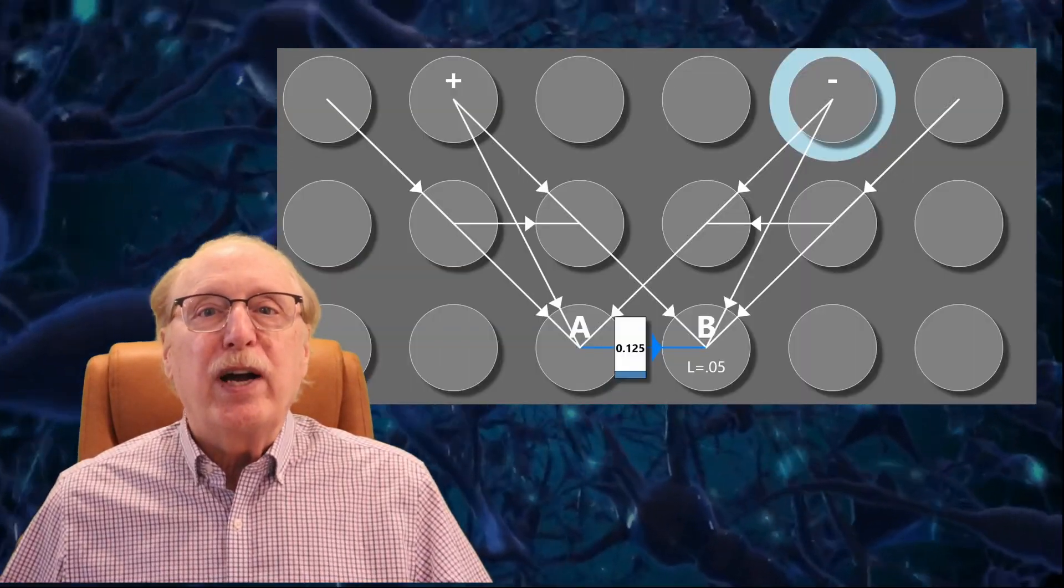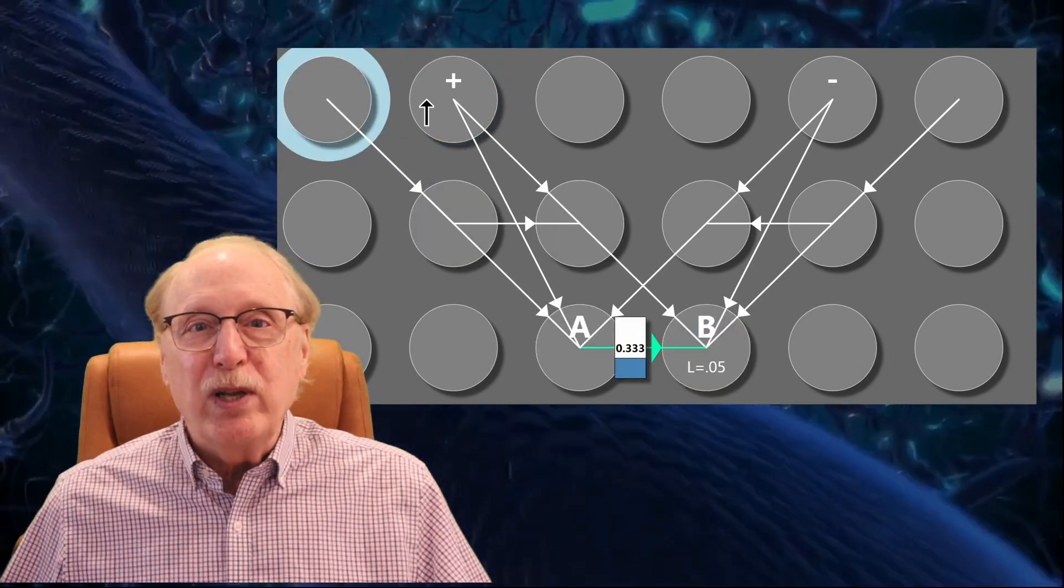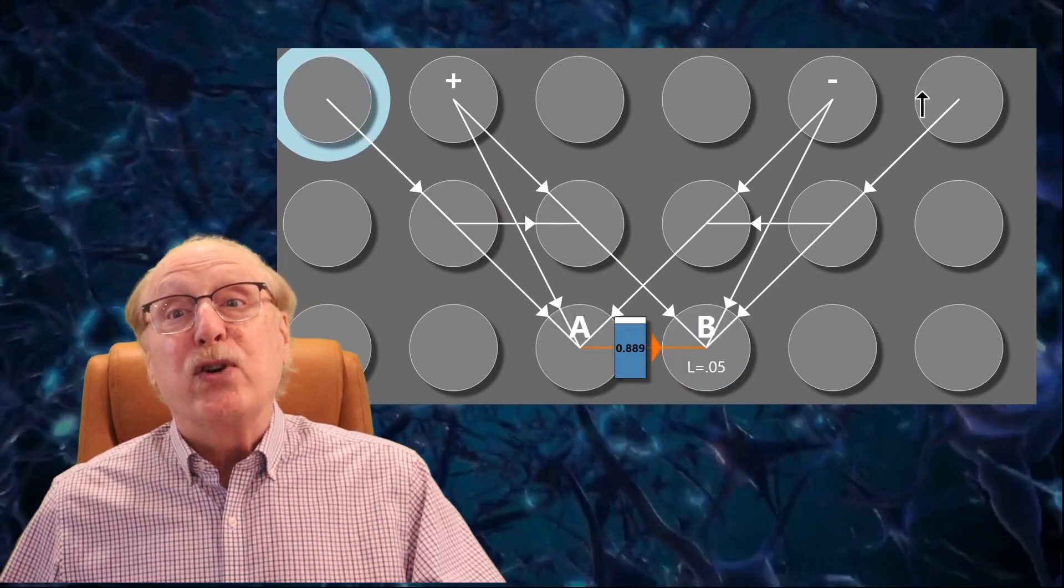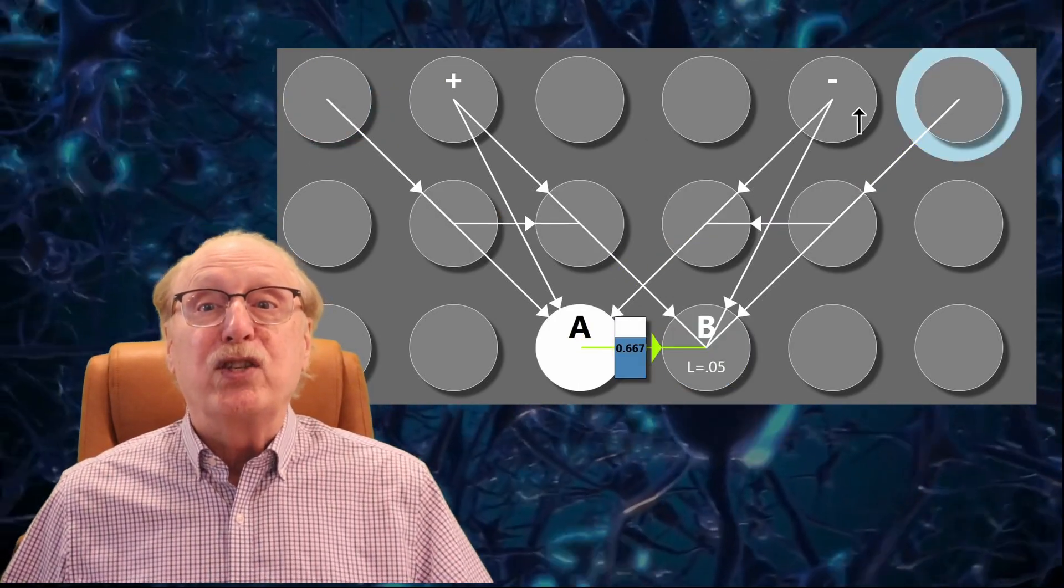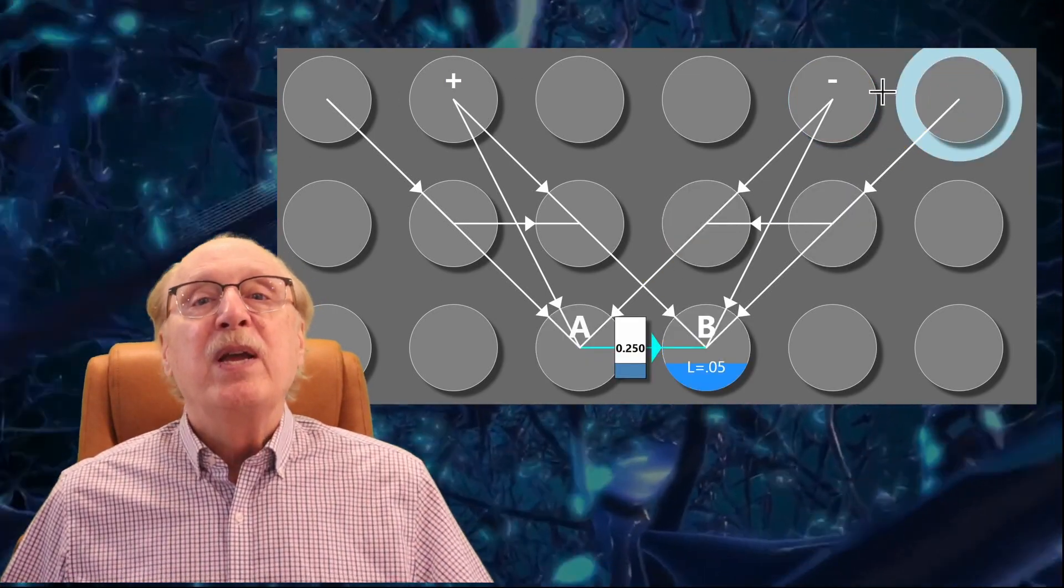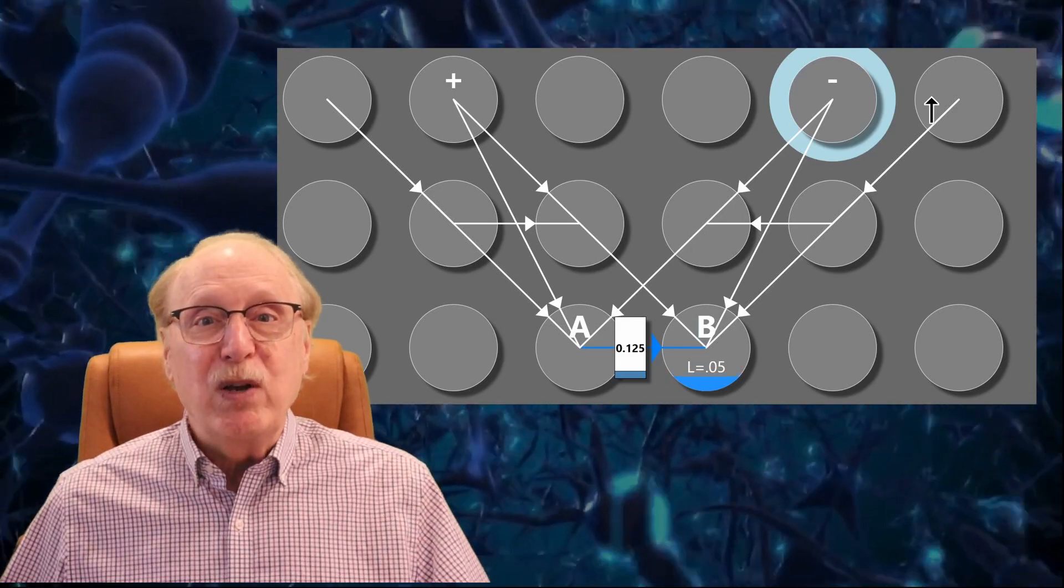That's the STDP rule in a nutshell. Here's a quick review. If the source neuron A spikes shortly before the target neuron B, the synapse weight will increase. The amount of time between the two spikes determines the amount of the increase. The closer the spikes, the greater the increase. If the target neuron spikes first, the synapse weight will be reduced.